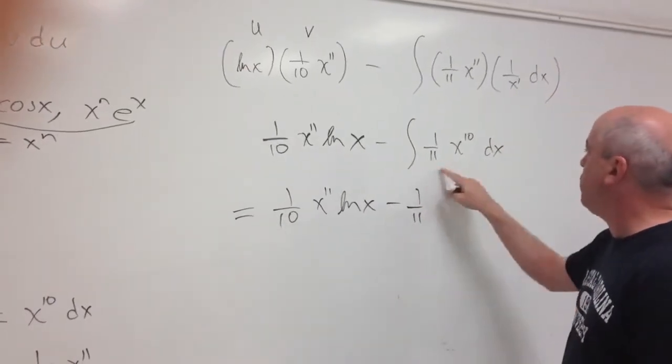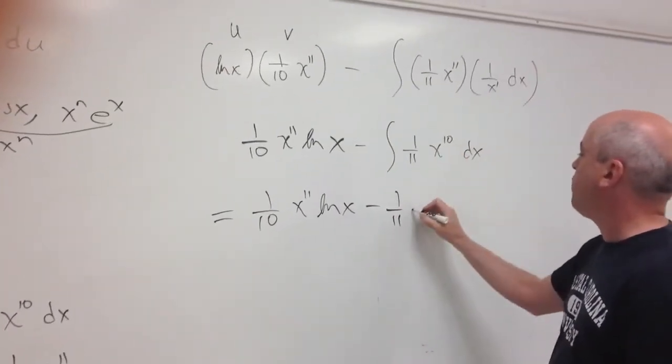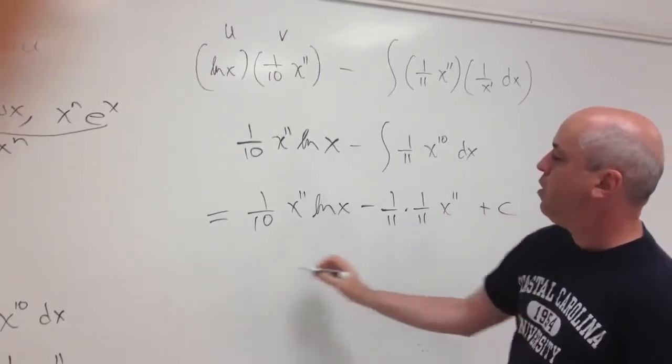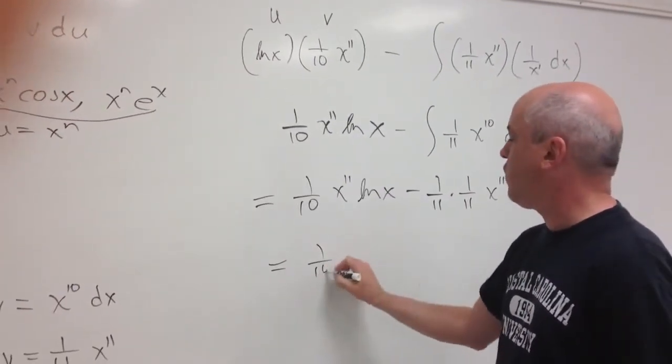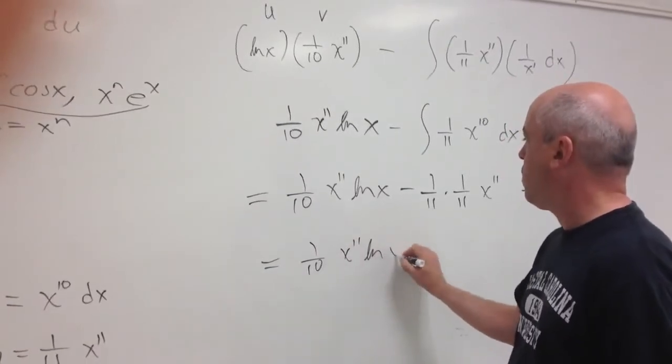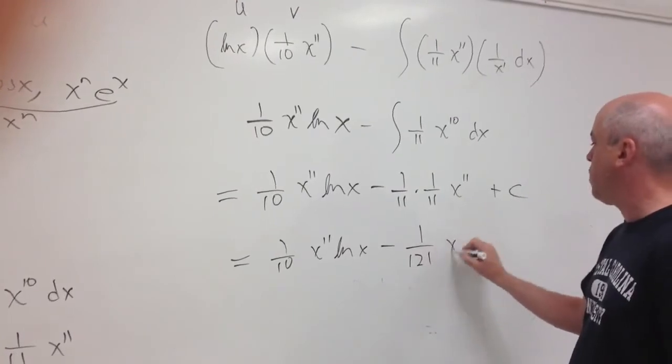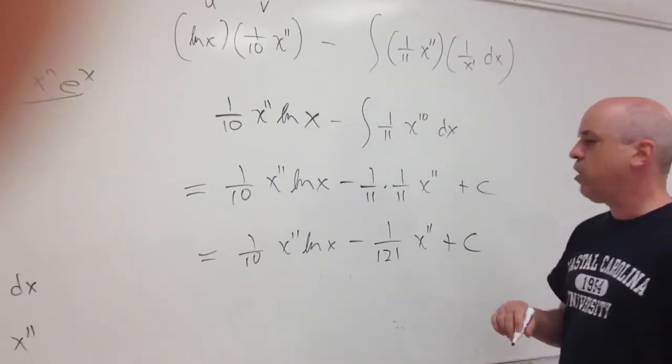1 over 11, constant multiple, another 1 over 11, x to the 11 plus c, and then a little bit of simplification. 11 squared is 1 over 121, and we're done.